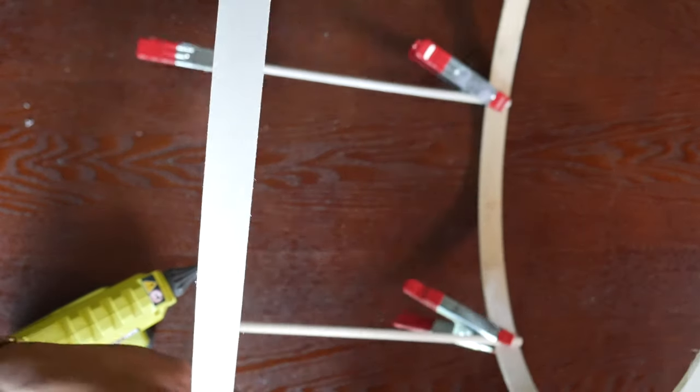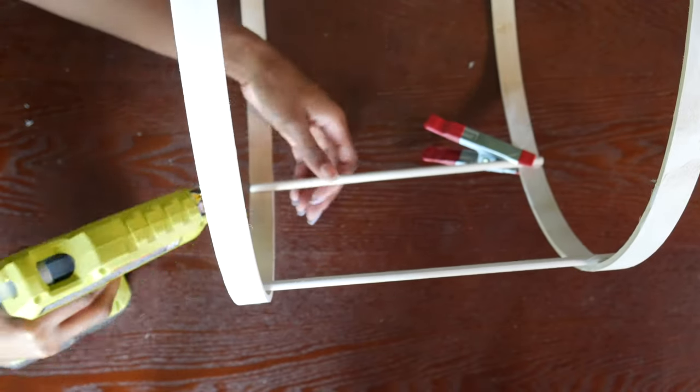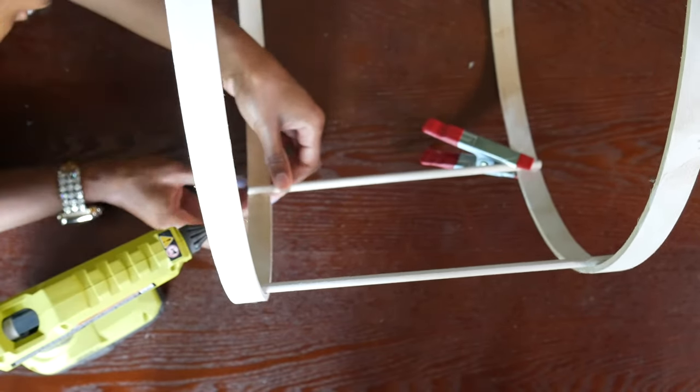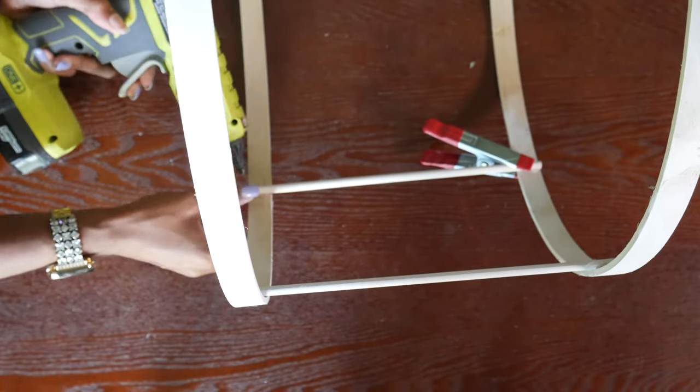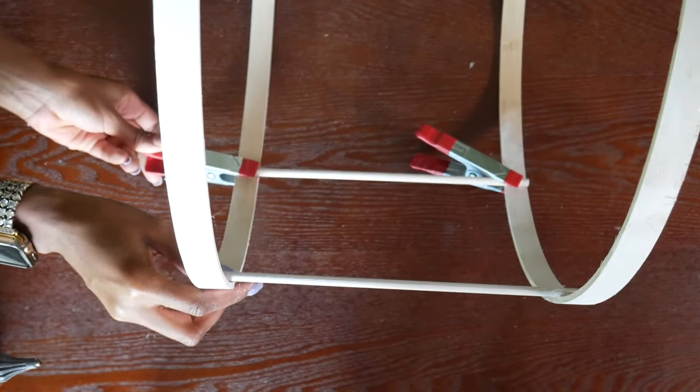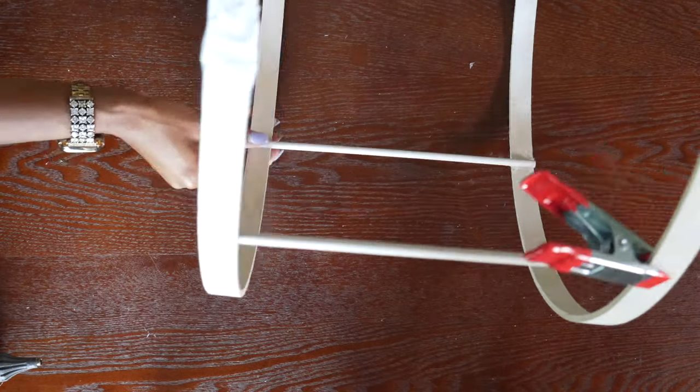I used hot glue, but I will say because my outer hoop was not the right shape, it did put stress on my dowels which made some of them start to fail.